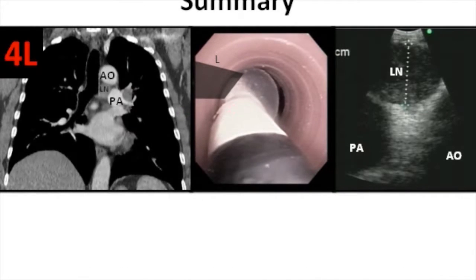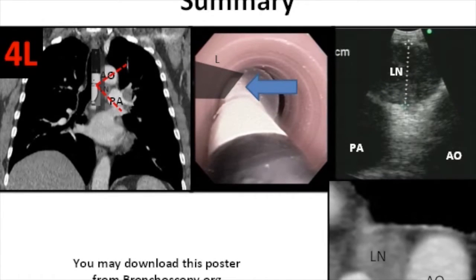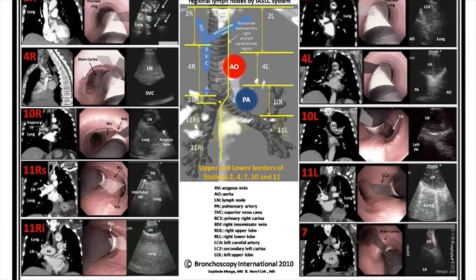To summarize, for station 4L the coronal CT is useful because it correlates with the EBUS scanning plane. The scope is in the lower trachea at the level of the main carina, rotated laterally to visualize the left paratracheal region, and the EBUS image represents the same structures as seen on the coronal CT. Using this poster, the same principles can be applied to understand correlations between computed tomography and endobronchial ultrasound for each of the regional lymph node stations.